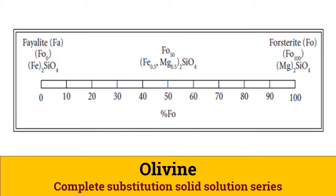The two end members of the olivine family are fayalite with 100% iron and forsterite with 100% magnesium content. The composition of olivine can be represented in a number of different ways, including their general name, exact chemical composition, or relative composition of the end members fayalite or forsterite. For example, the mineral fayalite has a chemical composition of Fe₂SiO₄, or can be referred to as Fe100, meaning 100% of its cations are iron, or it can be written as Fo0, meaning 0% of its cations are magnesium.